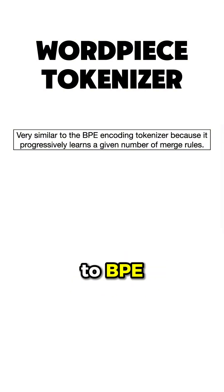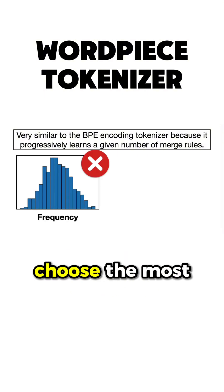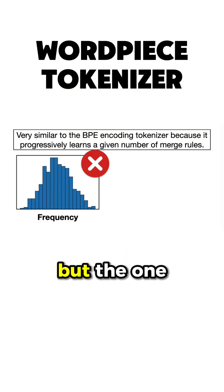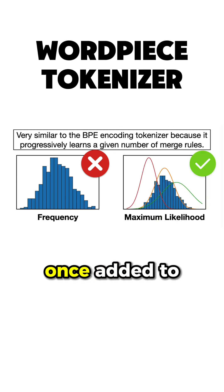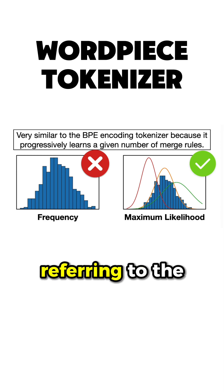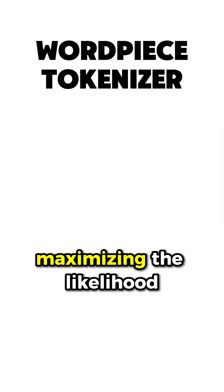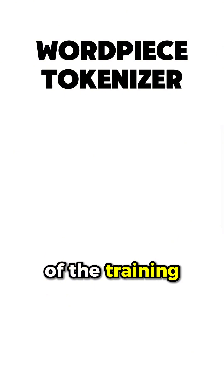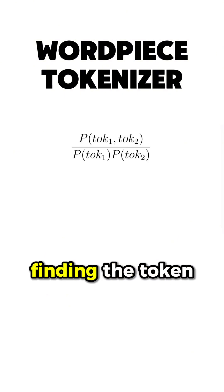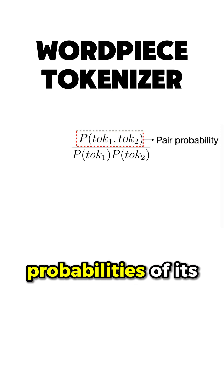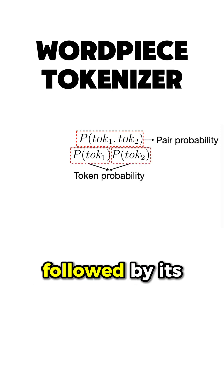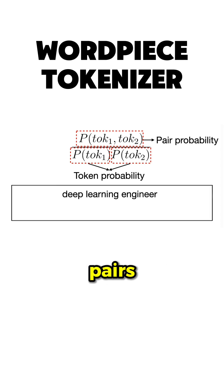However, in contrast to BPE, WordPiece does not choose the most frequent symbol pair, but the one that maximizes the likelihood of the training data once added to the vocabulary. So what does this mean more exactly? Referring to the previous example, maximizing the likelihood of the training data is equivalent to finding the token pair whose probability divided by the probabilities of its first token followed by its second token is the greatest among all token pairs.